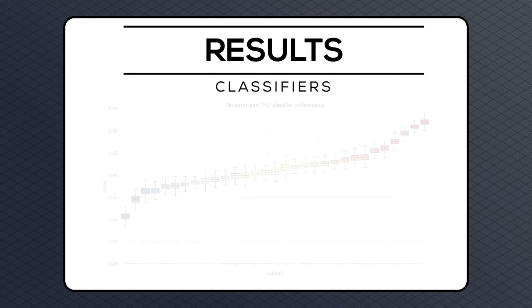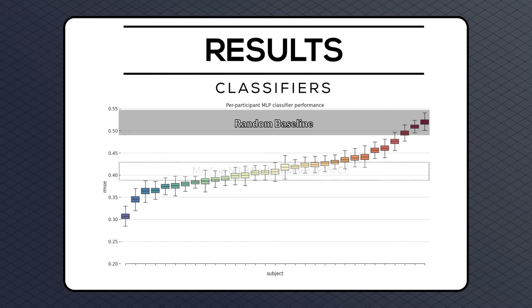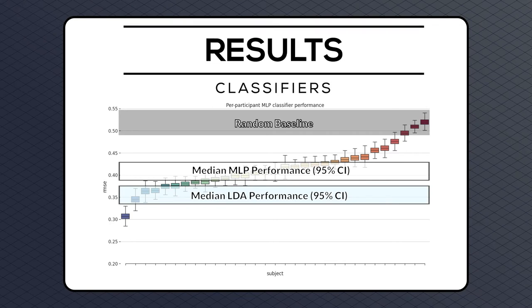During the preference inference task, both classifiers performed significantly better than the random baseline for an overwhelming majority of subjects. The LDA classifier achieved better performance than the MLP model, which reflects the prevailing understanding that LDA remains a computationally inexpensive approach to achieving state-of-the-art performance with ERP classification. The MLP results could likely be improved by modifying the neural network architecture such that the temporal features present in ERPs are more easily modeled. Nonetheless, both methods produced inferred preferences of a high enough quality where they could be reliably used in collaborative filtering.